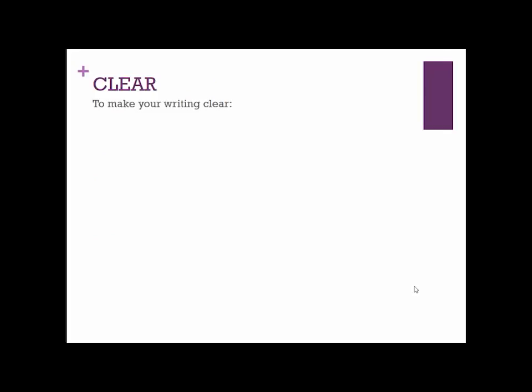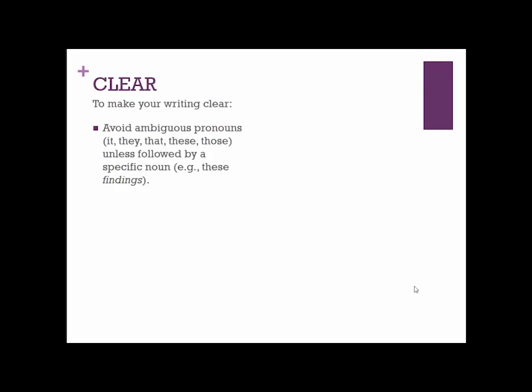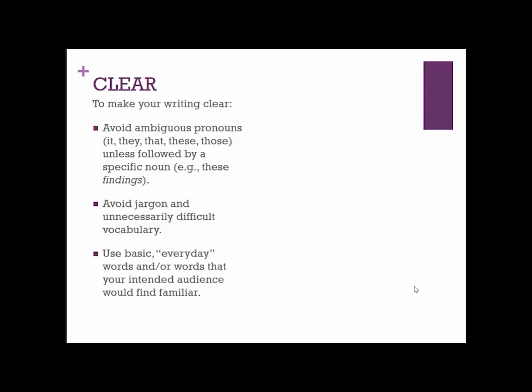To make your writing clear, first avoid ambiguous pronouns — words like it, they, that, these, and those — that fill the place of a noun without specifying what that noun is. If you use these words, only use them when followed by a specific noun, for example 'these findings.' Also, avoid jargon and unnecessarily difficult vocabulary. You often sound smarter if you use basic, everyday words that clearly communicate your ideas. Use words your intended audience would find familiar, and read the journals you're modeling so you get a sense of the discourse and vocabulary that audience expects.